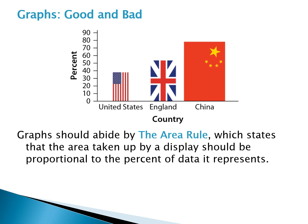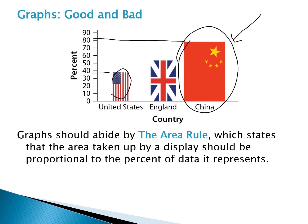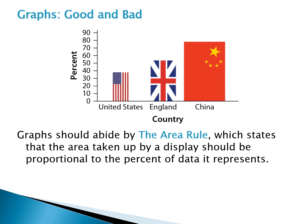Looking at the scale on the left, China is about twice as large as the US — US is at about 40% and China at about 80%. But the area taken up by the China flag graphic is a lot bigger than twice as big; it's probably about four times as big. That creates a deceptive way to make us think this value is actually a lot larger than it really is.